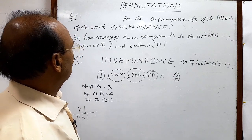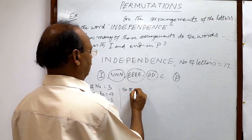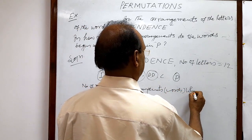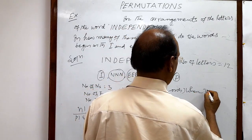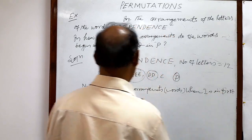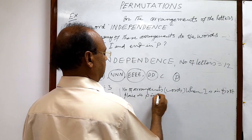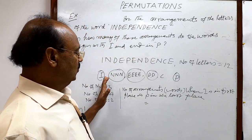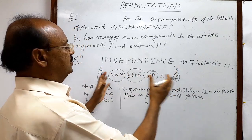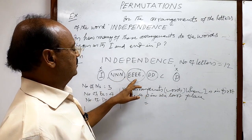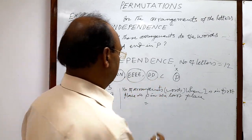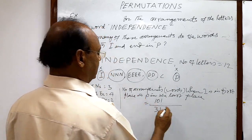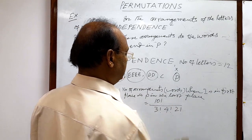So in this case, the number of arrangements — number of words — when I is in the first place and P is in the last place will be: we should not count I and P because there will be no change in the position of these two letters. So remaining letters: 3 plus 4 is 7, plus 2 is 9, plus 1 is 10. This will be 10 factorial, divided by 3 factorial for the 3 N's, by 4 factorial for the 4 E's, and by 2 factorial for the 2 D's.